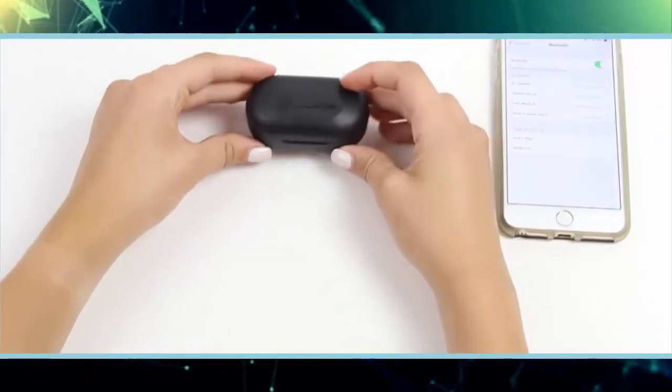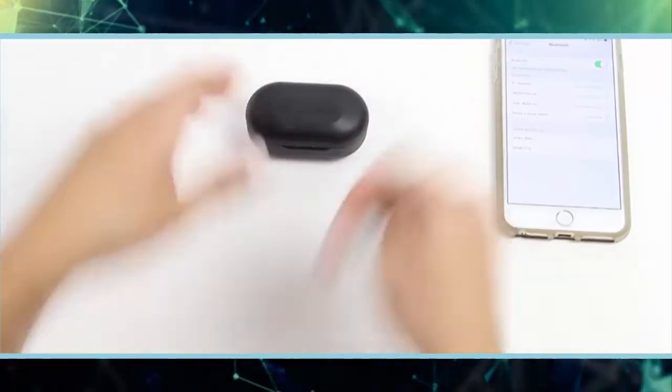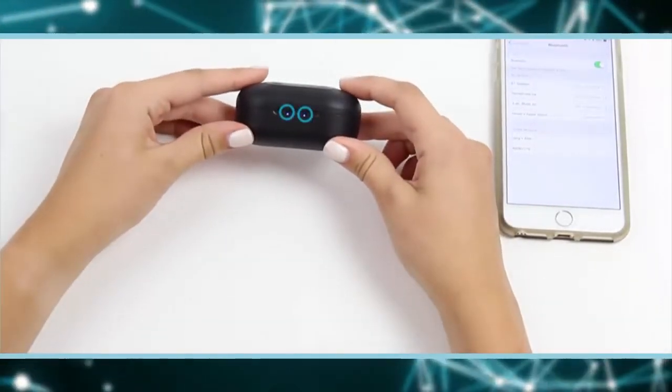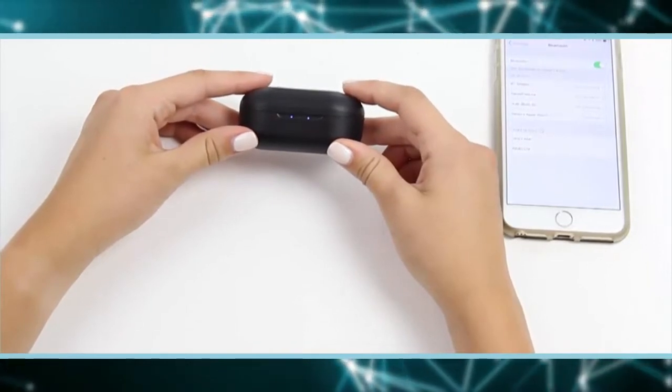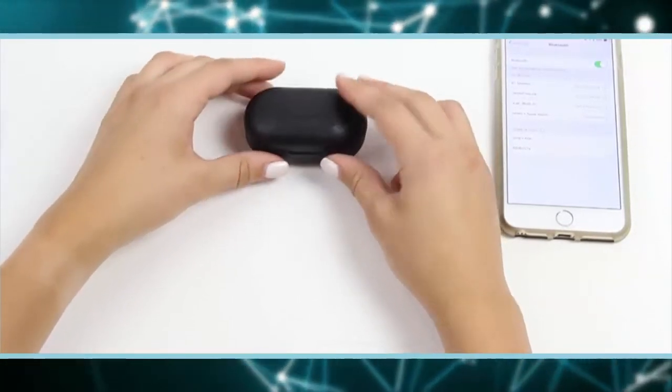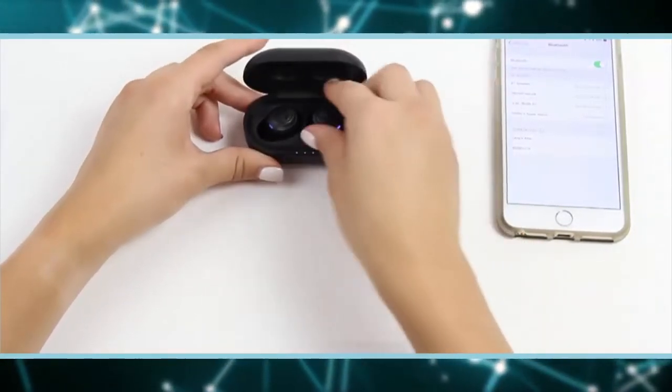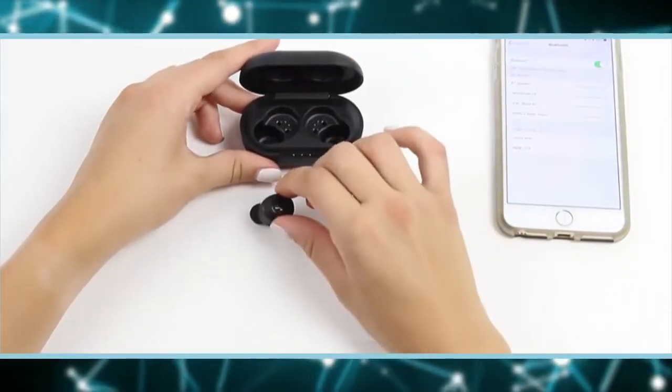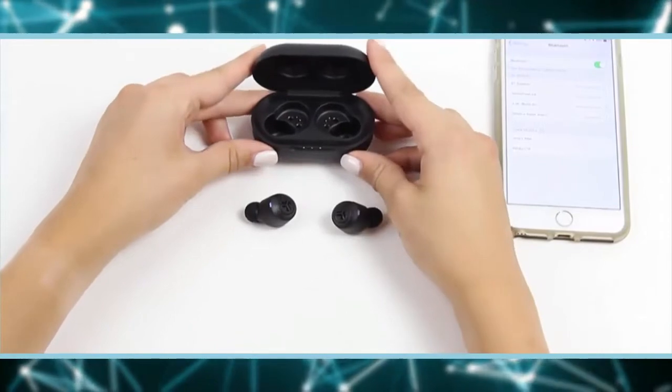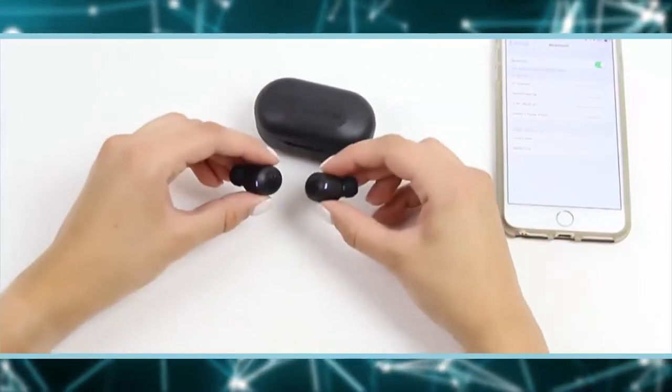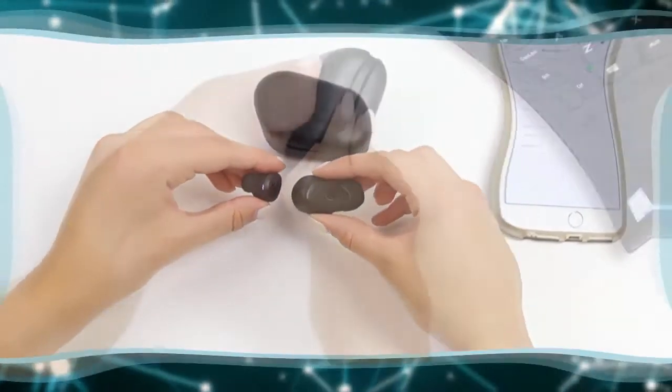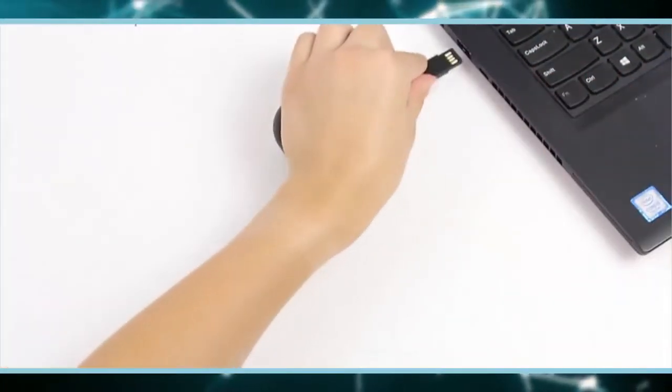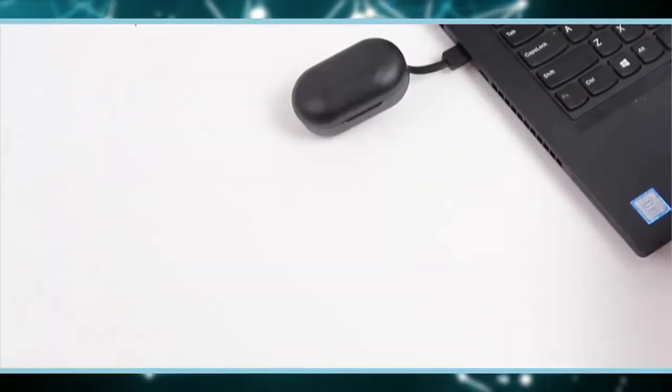JLab packs in three different listening modes that can be toggled by tapping the left earbud three times. Balanced is what it sounds like, nothing is emphasized over anything else. Bass boost is also self-explanatory. The last one, JLab Signature, boosts both vocals and bass for what I think is the best sounding option of the three. I'm not necessarily an audiophile, but I have no complaints about how they sound compared to AirPods.